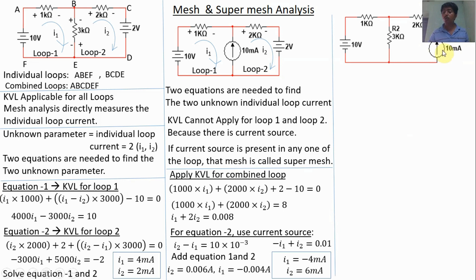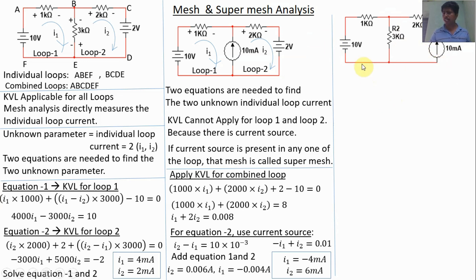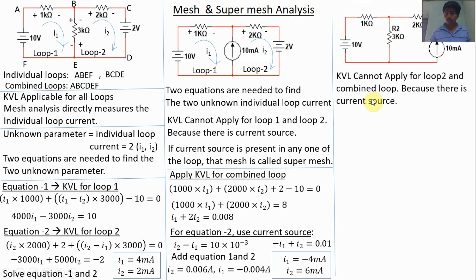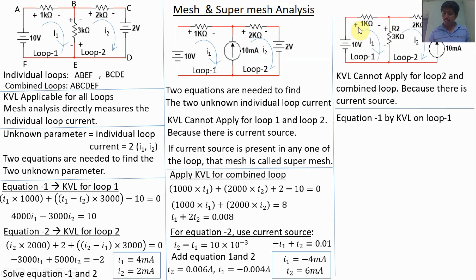Now let's solve the third problem — Type 3 — where the current source is present inside loop 2. Again, there are two unknown loop currents, so we need two equations. We cannot apply KVL for loop 2 or for the combined loop, because the current source appears in both. For equation 1, we apply KVL for loop 1 only, and mark the polarity.